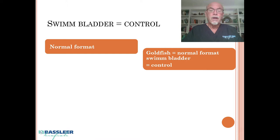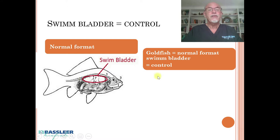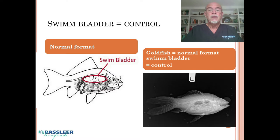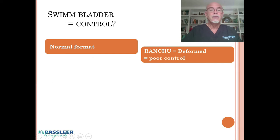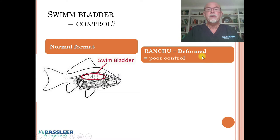The swim bladder is the way a fish controls its balance in the water. In the normal format, there are two swim bladders nicely aligned at the dorsal part of the body of a goldfish. As we see on this x-ray, the normal, well-controlled swim bladder makes it possible for a fish to maintain good balance.